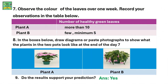Your last step is to observe the color of the leaves over 1 week and record your observations in the table below. Plant A had more than 10 healthy green leaves, but plant B had a minimum of 5 green leaves. In the boxes below, draw diagrams or paste photographs to show what the plants in the two pots looked like at the end of day 7. Plant A looked very healthy and had grown a lot, but plant B wilted and was dull as it didn't have any water.